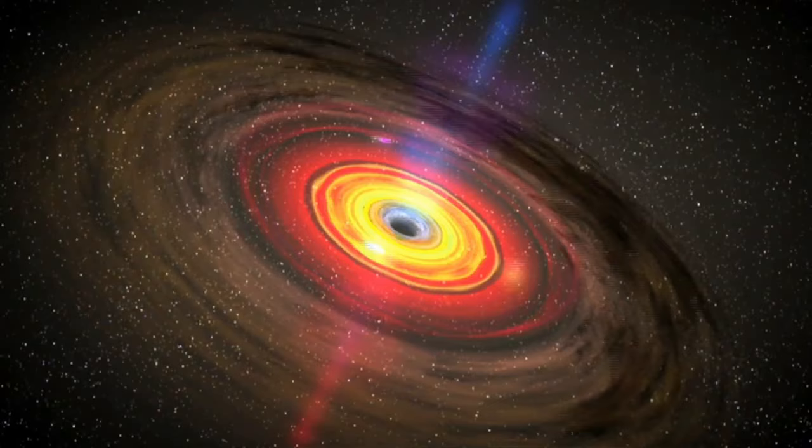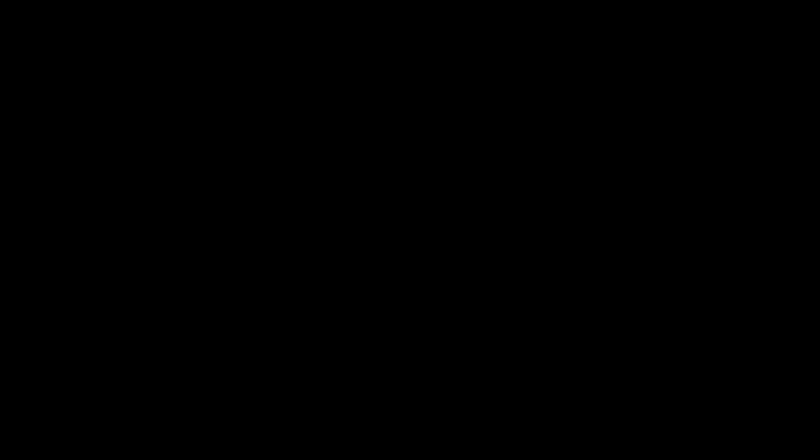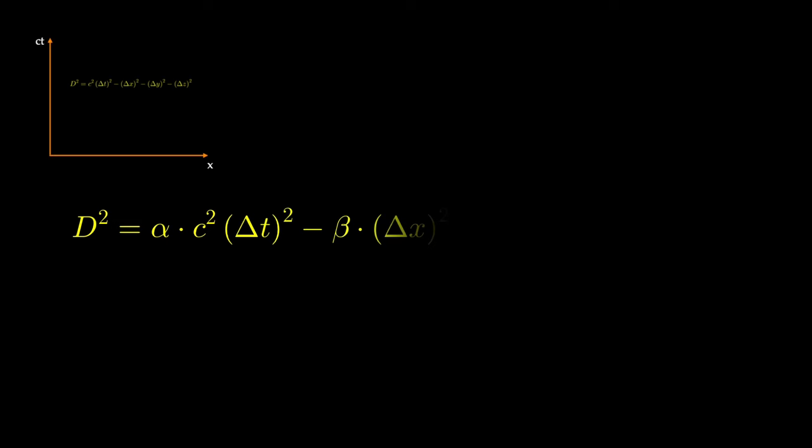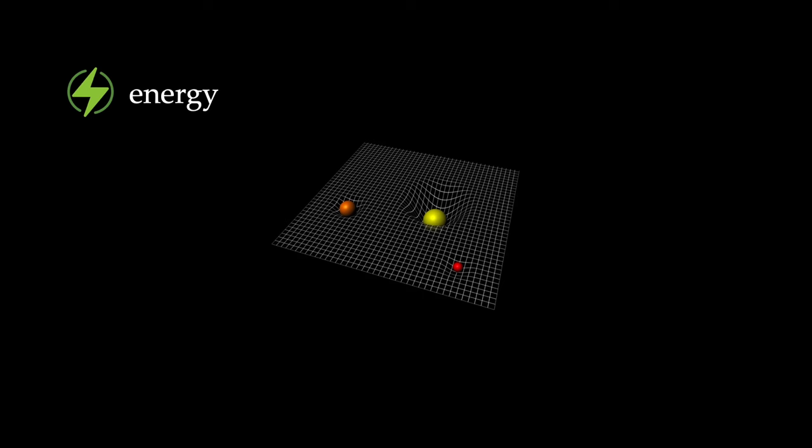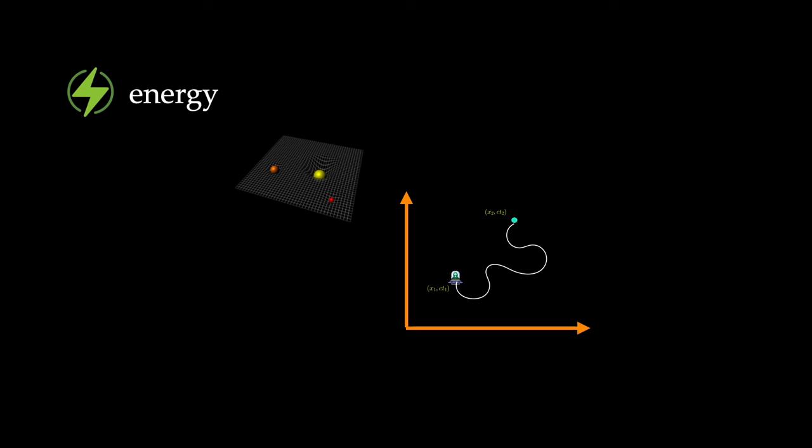How would the metric look in curved spacetimes? So far we have only looked at the Minkowski metric for flat spacetime. For most cases, the metric looks like a modified Minkowski metric — the time and space components each get a prefactor dependent on the energy distribution that is curving spacetime. So energy curves spacetime, which changes distances between events, and therefore changes each component of the metric by multiplying them with a prefactor. To determine those prefactors, one has to solve the Einstein field equation.